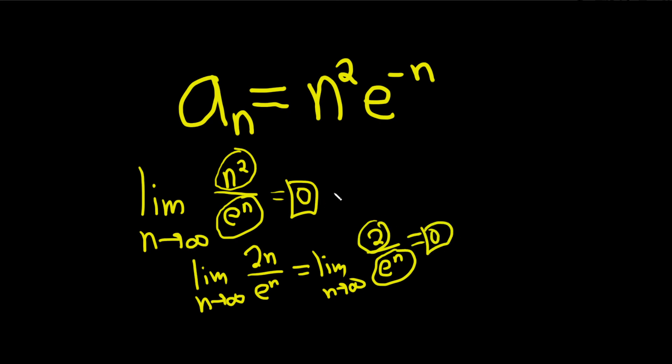In any case, zero is called the limit of the sequence. And because we have a limit, because when we take the limit we get a number which is called the limit, we say the sequence converges. If you take the limit and you don't get a number, then you say the sequence diverges.